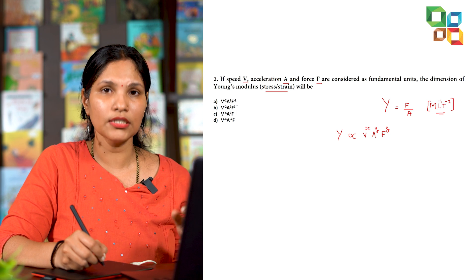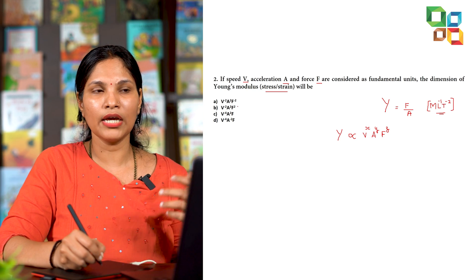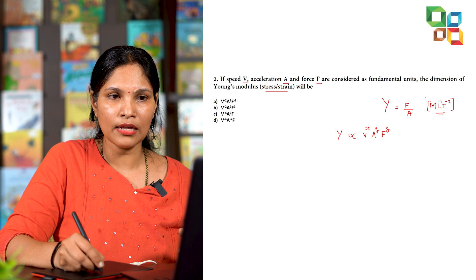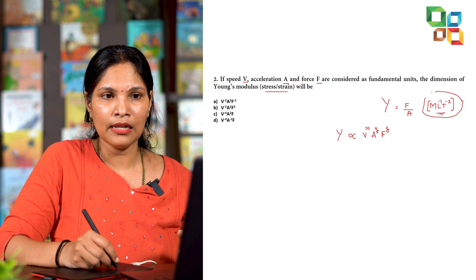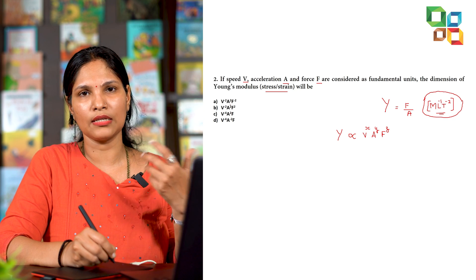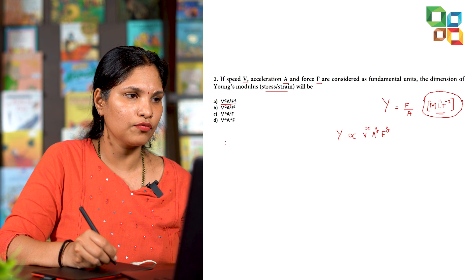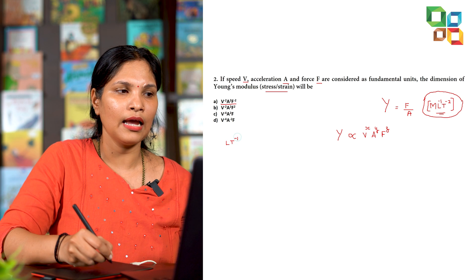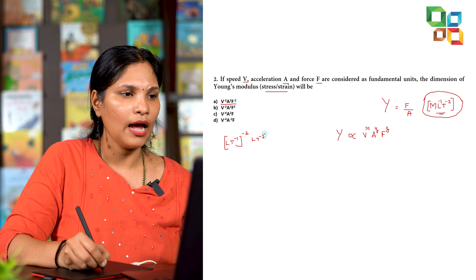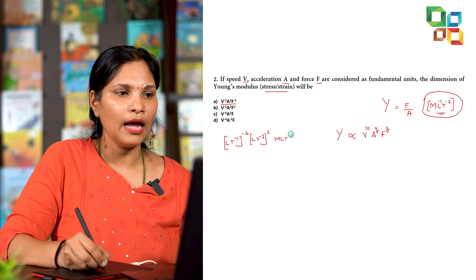Instead, we use the reverse solving method: pick the options and work backwards to get M·L⁻¹·T⁻². Velocity has dimension L·T⁻¹, acceleration L·T⁻², and force M·L·T⁻². For the first option, velocity has power -2 and force has power -2, giving M a power of -2. But we need M's power to be 1, so the first option is discarded.